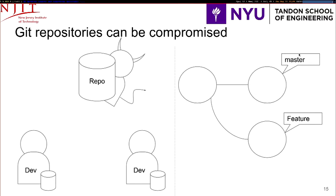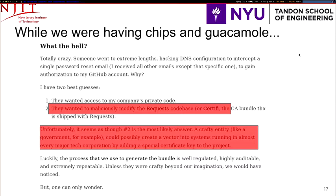Now, what I want to emphasize is that these repositories can be compromised. While we were having chips and snacks Tuesday night, someone was actively trying to break into the GitHub account of a developer for requests, which is a general HTTP request framework that also handles CA verification. I agree with the quote that a crafty attacker — a government or a powerful attacker — could just sneak in a little backdoor that would then be propagated into systems running in almost every major tech corporation and exploit them afterwards.